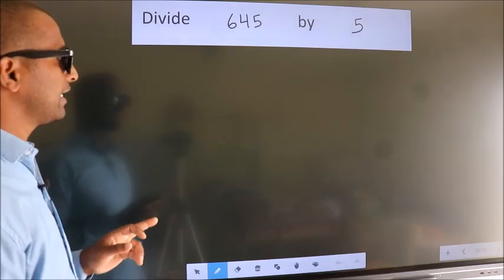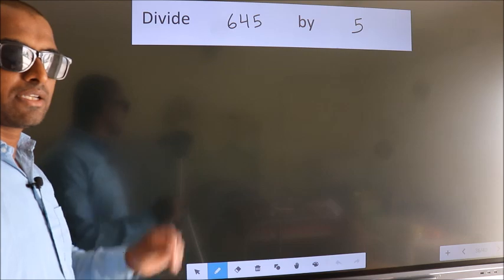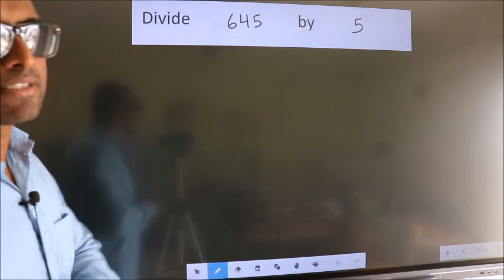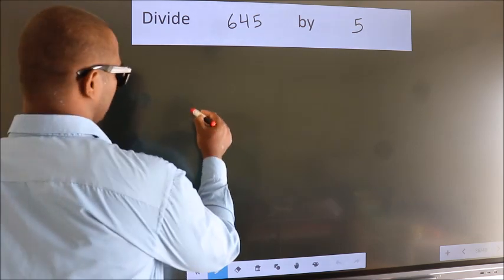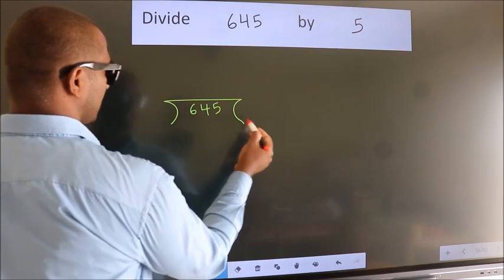Divide 645 by 5. To do this division, we should frame it in this way. 645 here, 5 here.